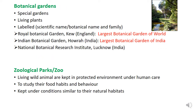The next taxonomic aid is Botanical Gardens. These are gardens where plants are kept and we can study them. You may ask: what is the difference between herbarium and botanical gardens? In herbarium we keep dead plants, but in botanical gardens we keep living plants.